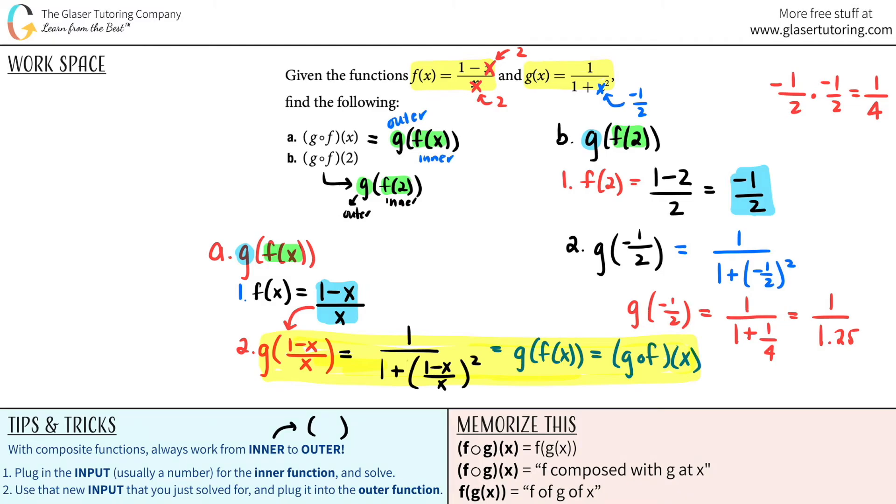So we will say g of negative 1 half, which is the same thing as g of f of 2, which is the same thing as this thing, just equals 4 fifths. Look at that. And that is your answer for the second part.